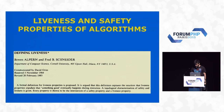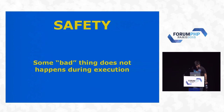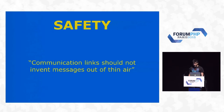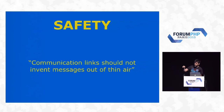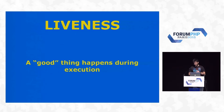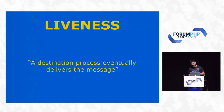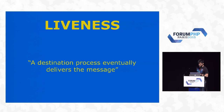Algorithms talk about liveness and safety. There is a paper from 1984 that introduces all this. Safety basically means some bad thing does not happen during execution — for example, communication links should not invent messages out of thin air. In Erlang, you know this doesn't happen. Liveness is the opposite: a good thing happens during execution. For example, a destination process eventually delivers the message. You don't know when it will happen, but the algorithm assumes at some point it will, and then proves why. Messages are not going to be waiting forever to be received.